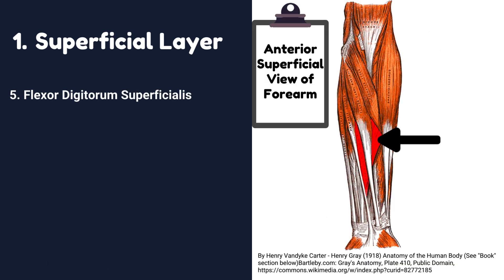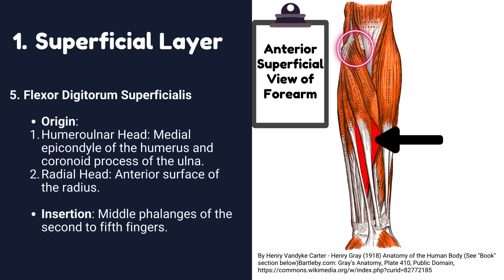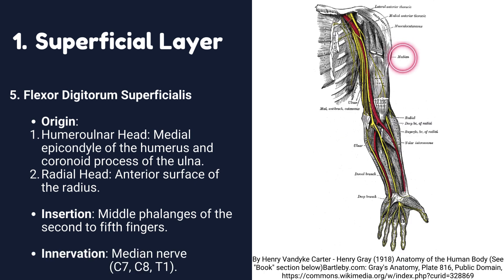Number five: Flexor digitorum superficialis. Origin: it has two heads. Humero-ulnar head originates from the medial epicondyle of the humerus and coronoid process of the ulna. Radial head originates from the anterior surface of the radius. Insertion: it is inserted into the middle phalanges of the second to fifth fingers. Innervation: it is innervated by the median nerve.